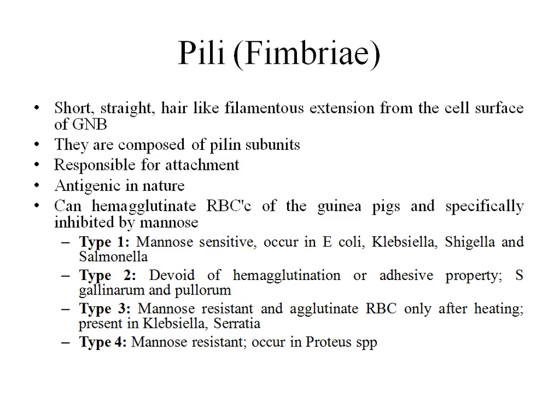The next cell wall appendage is pili, also known as fimbriae. Pili are short, straight, hair-like filamentous extensions from the cell surface, usually present in gram-negative bacteria. They are composed of proteinaceous pilin subunits. Pili are responsible for the attachment of bacteria to host cells. Many pili proteins help in attachment to various organs — for example, the P pili of Escherichia coli, which binds specifically to the uroepithelium.